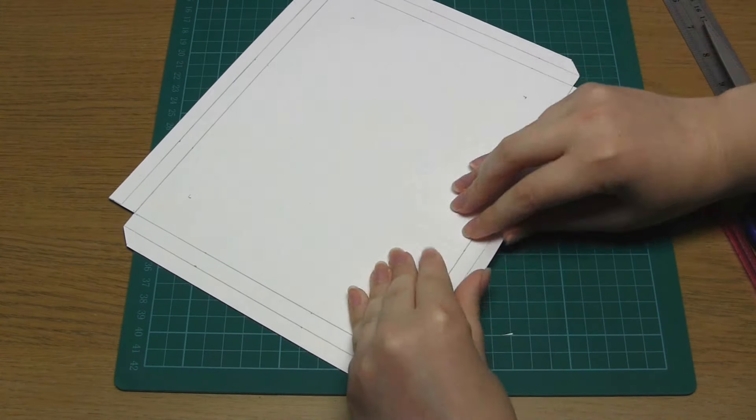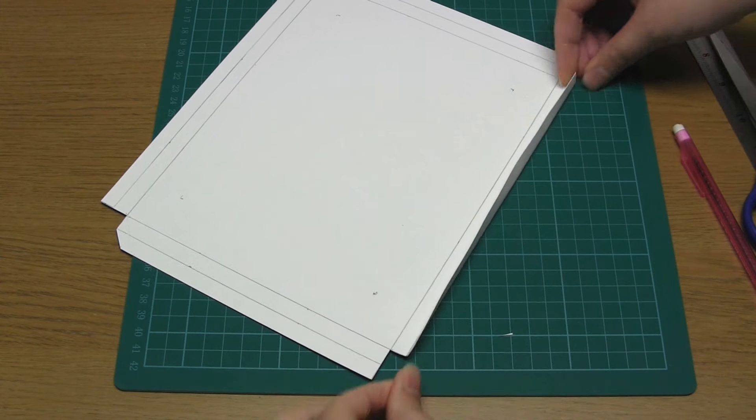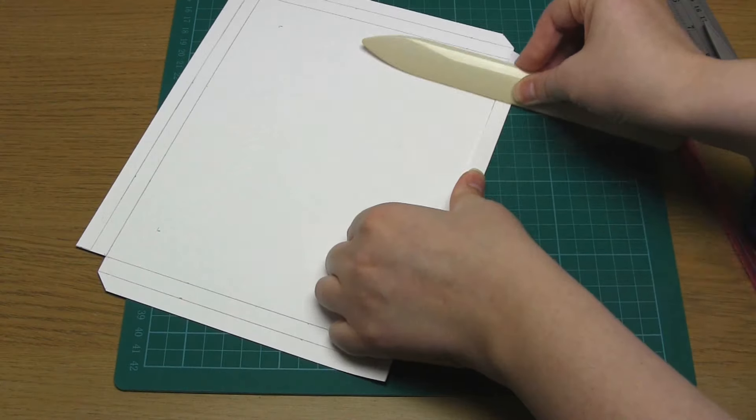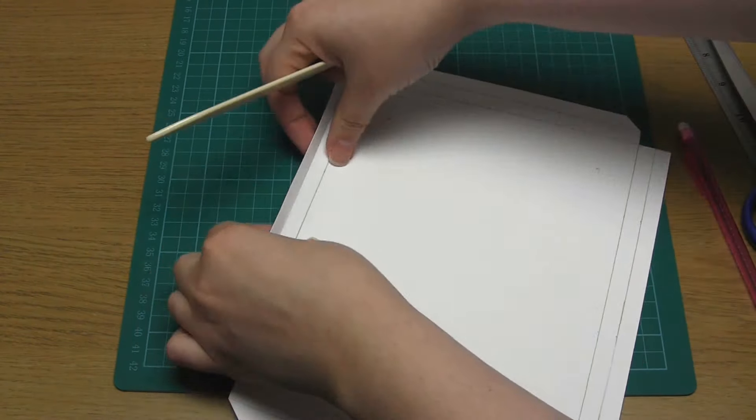Then fold up the edges of the card along the pencil lines. Use a bone folder to make those folds nice and crisp.